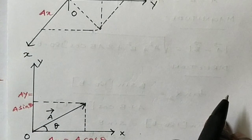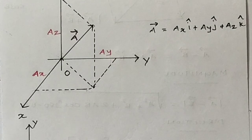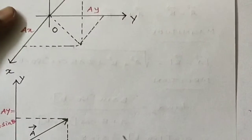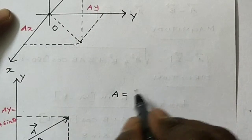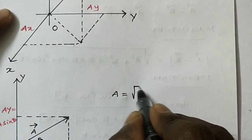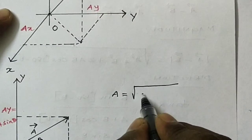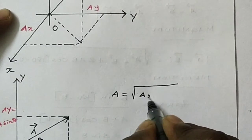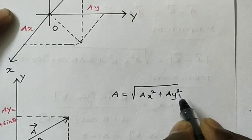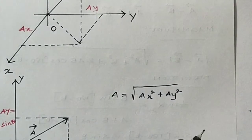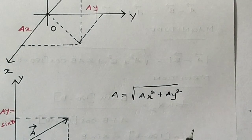So now we can find the magnitude of the vector A. In 2 dimensions, the magnitude means it is the square root of AX squared plus AY squared. That is the magnitude of the vector.